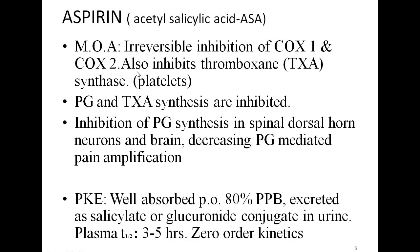The pharmacokinetics of aspirin: on oral administration, almost all administered aspirin is well absorbed. More than 80% is plasma protein bound; it is excreted as salicylate or glucuronide conjugate in urine. At usual therapeutic doses, aspirin follows first-order kinetics with a plasma half-life of 3 to 5 hours. In case of overdose, the elimination kinetics shifts from first-order to zero-order, meaning only a constant amount of drug is excreted per unit time.